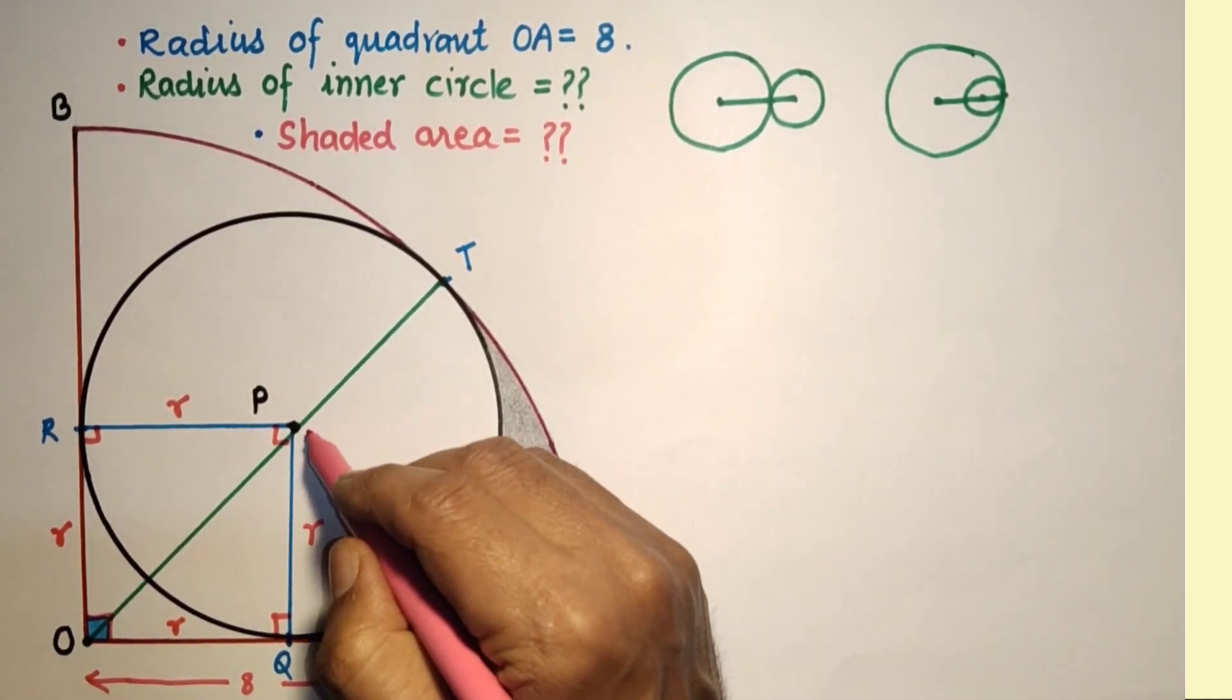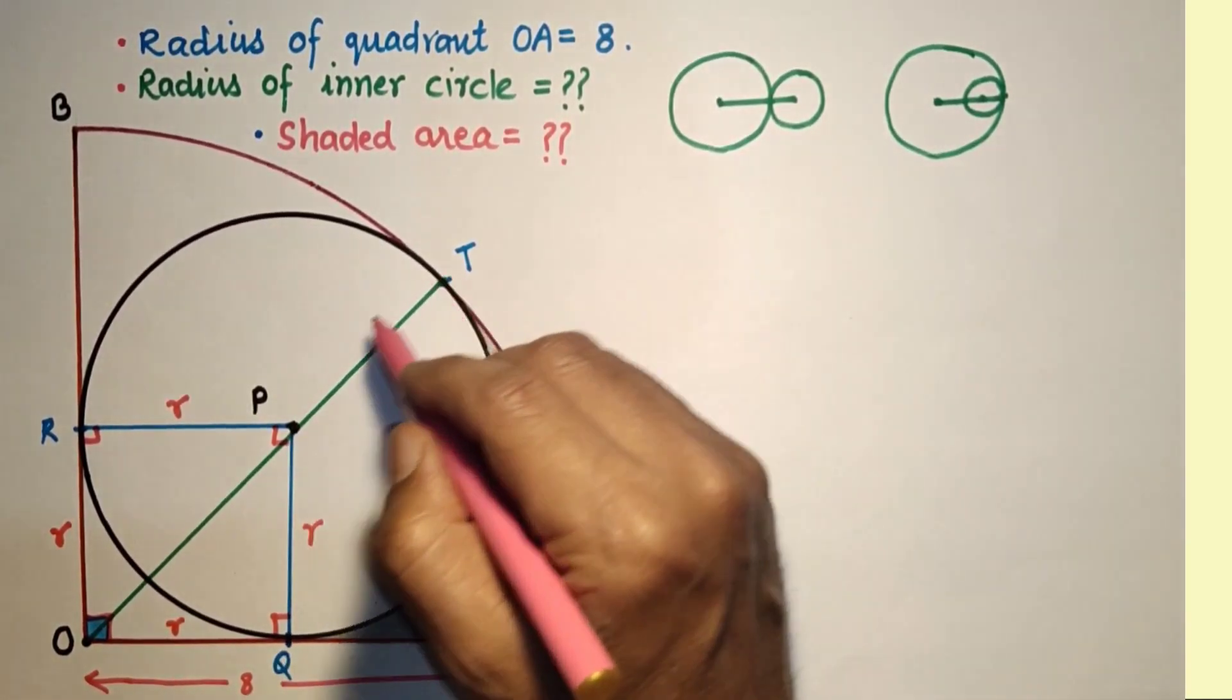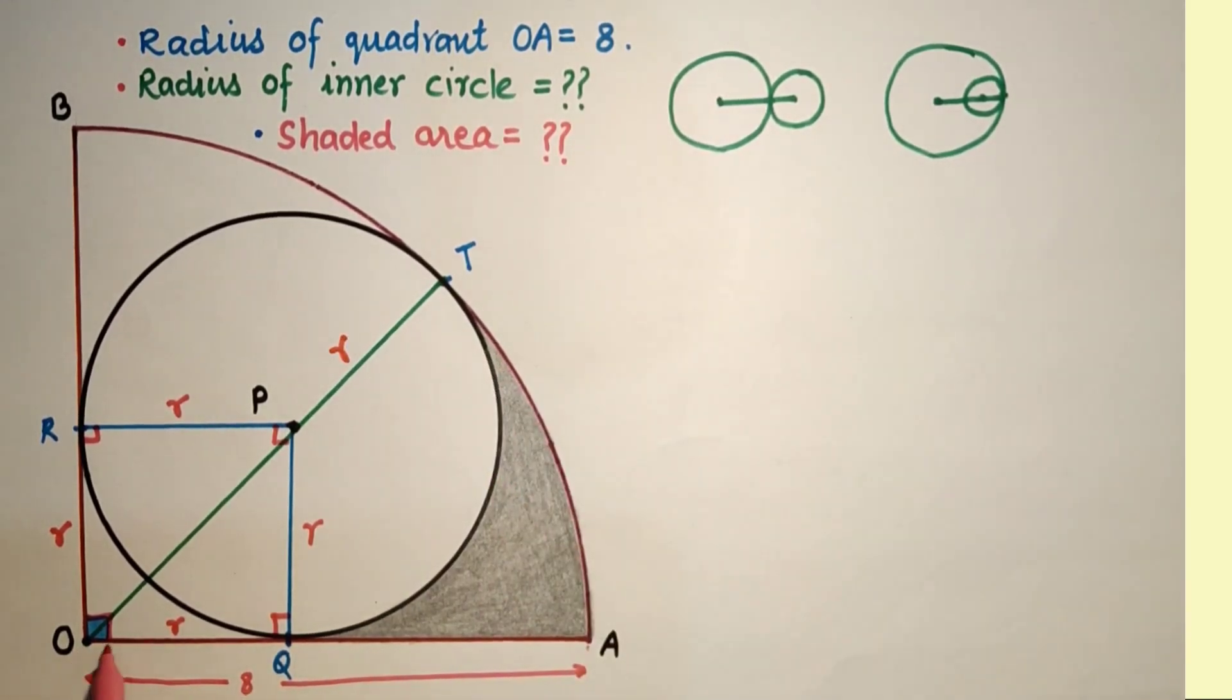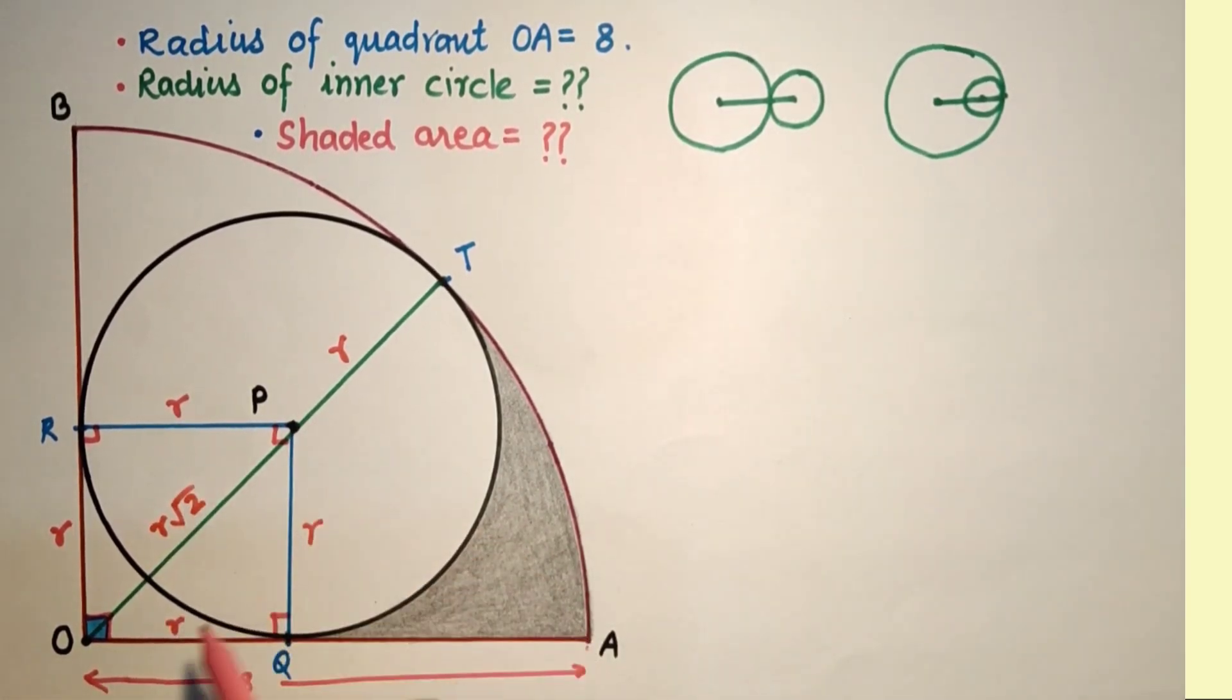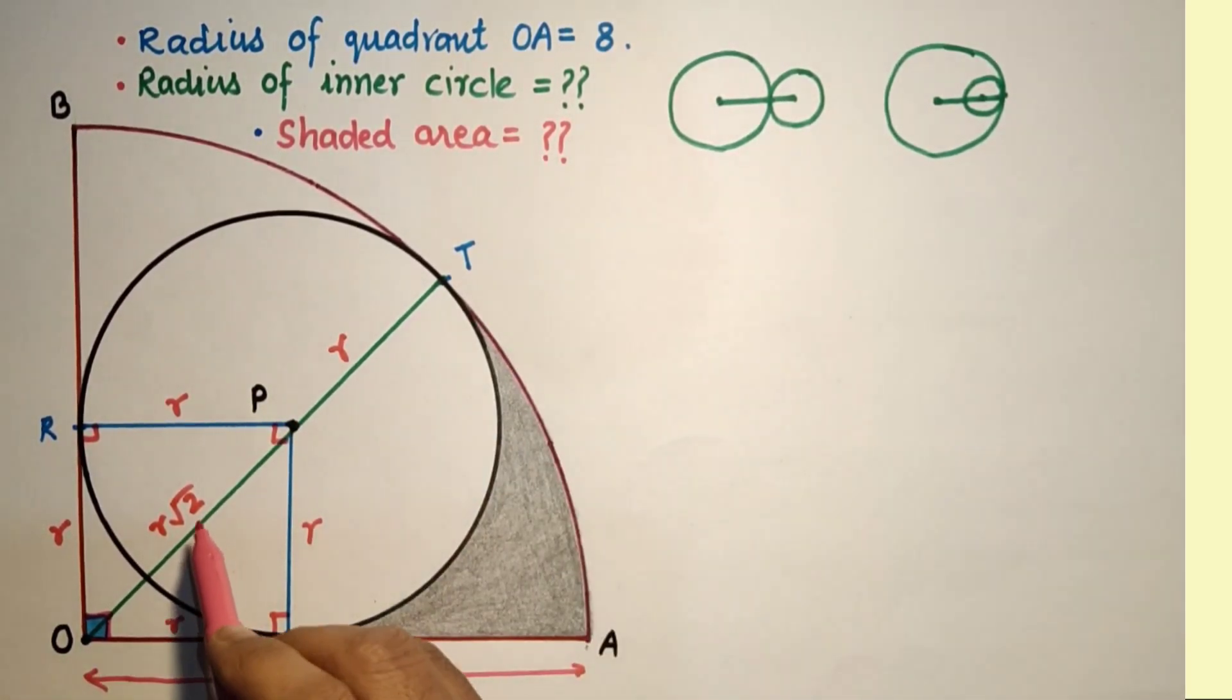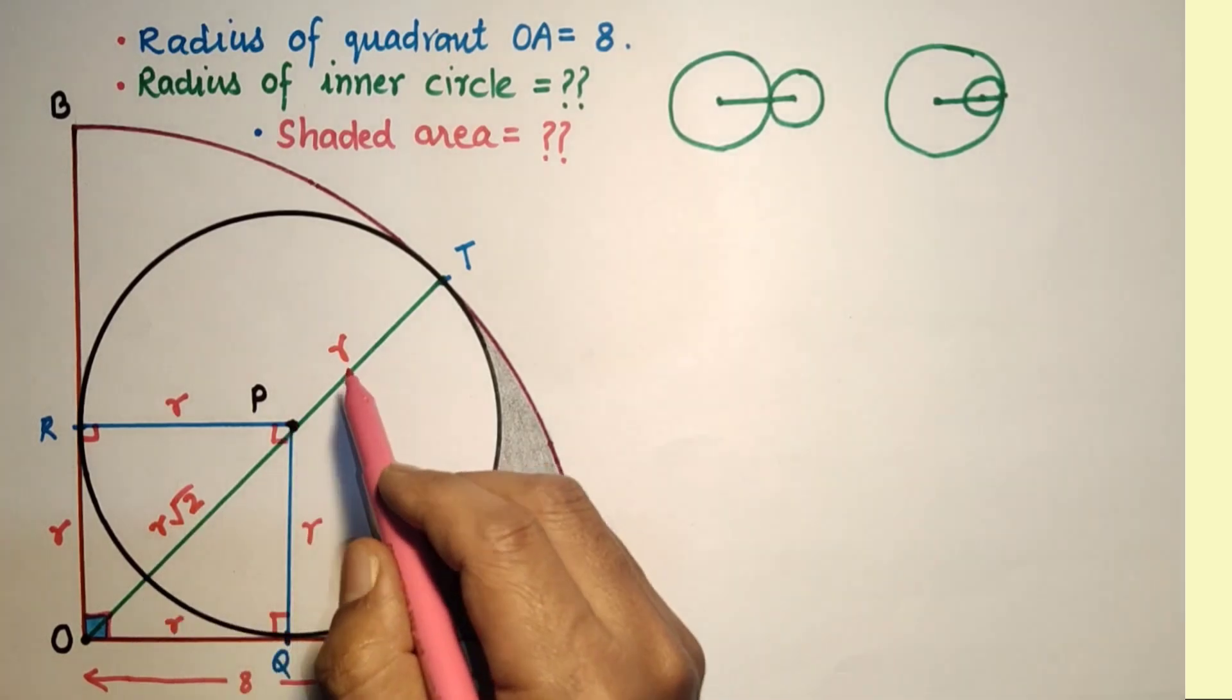From P to T, center to circumference, this is again R. So OP will be by Pythagorean theorem R√2. So OP plus PT is OT, and this OT is OA which is 8.